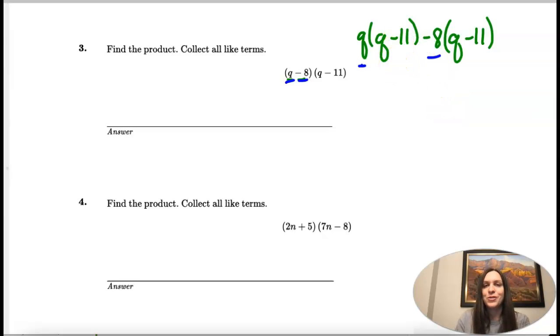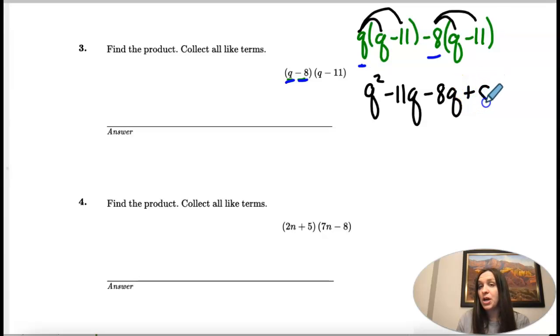Now it's set up to do the distributive property. Q times Q is Q squared. Q times negative 11—we write the negative 11 first and then the Q. Negative 8 and Q, when we multiply, we just stick those together. Negative 8 times negative 11 is positive 88. We're not done yet. We need to look for like terms.